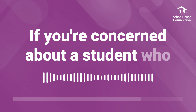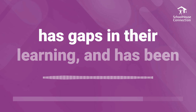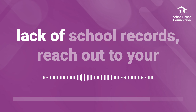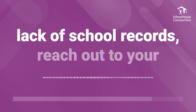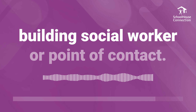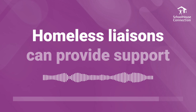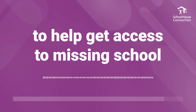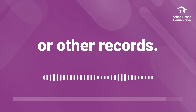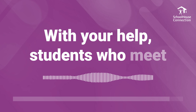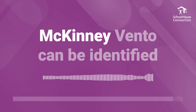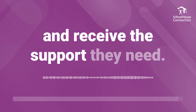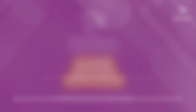If you're concerned about a student who has gaps in their learning and has been enrolled in multiple schools, or even has a lack of school records, reach out to your building social worker or point of contact. Homeless liaisons can provide support to help get access to missing school or other records. With your help, students who meet the definition of homeless under McKinney-Vento can be identified and receive the support they need. Thank you for listening.